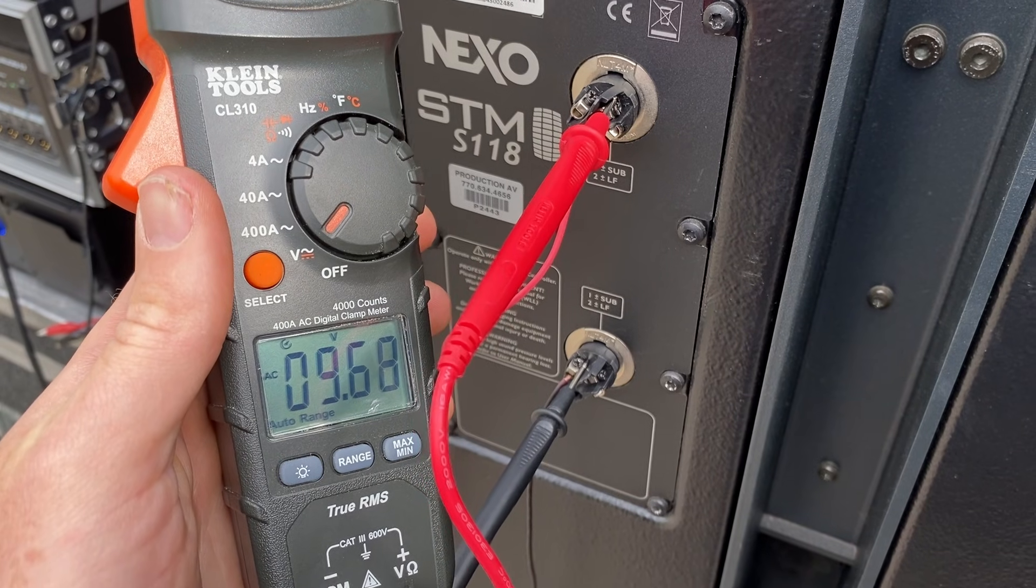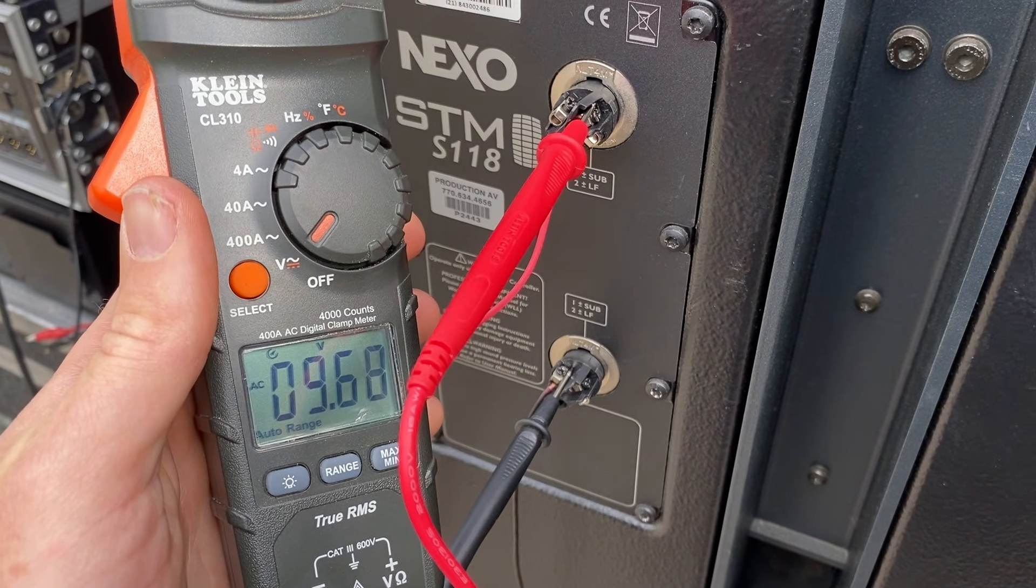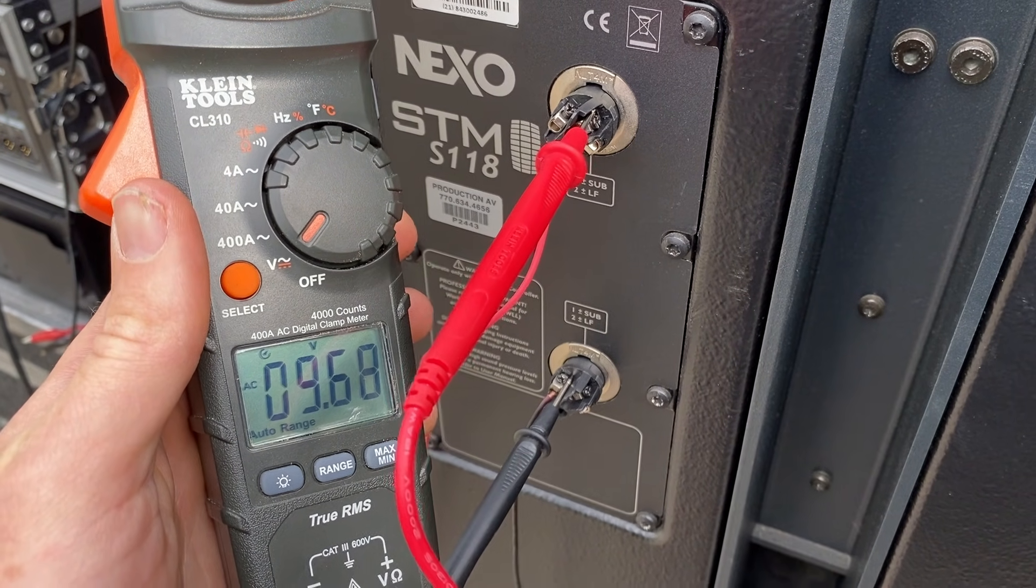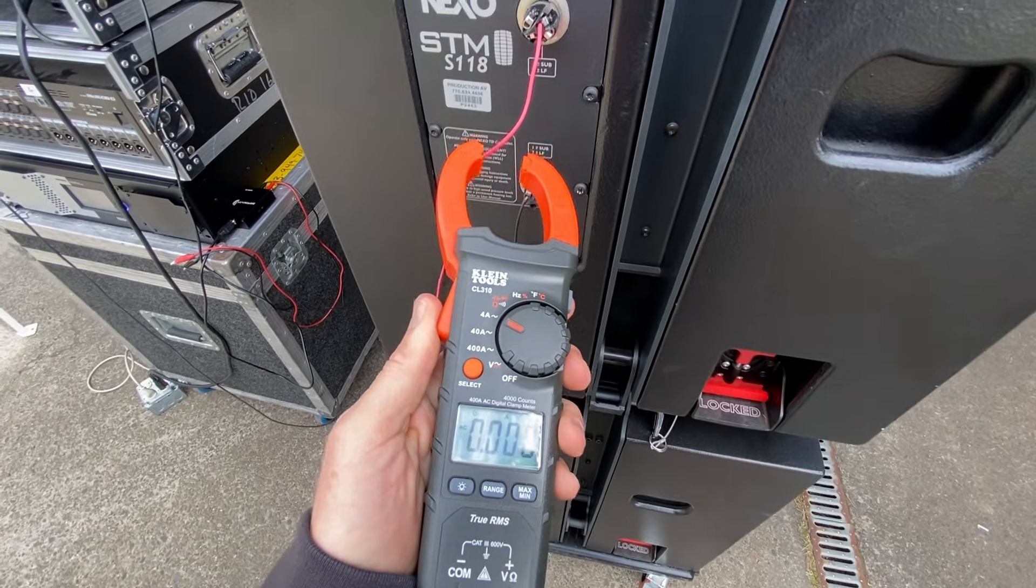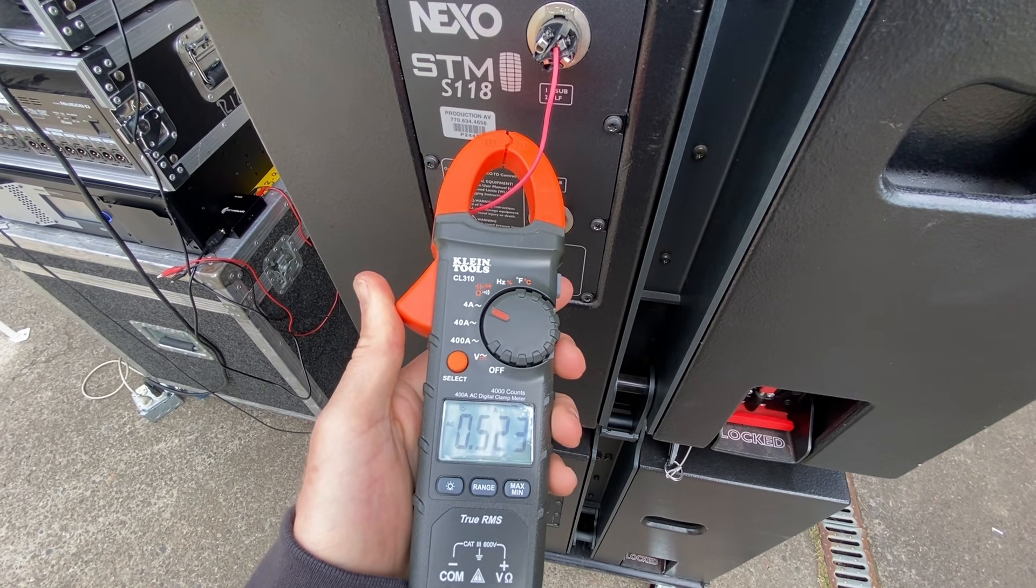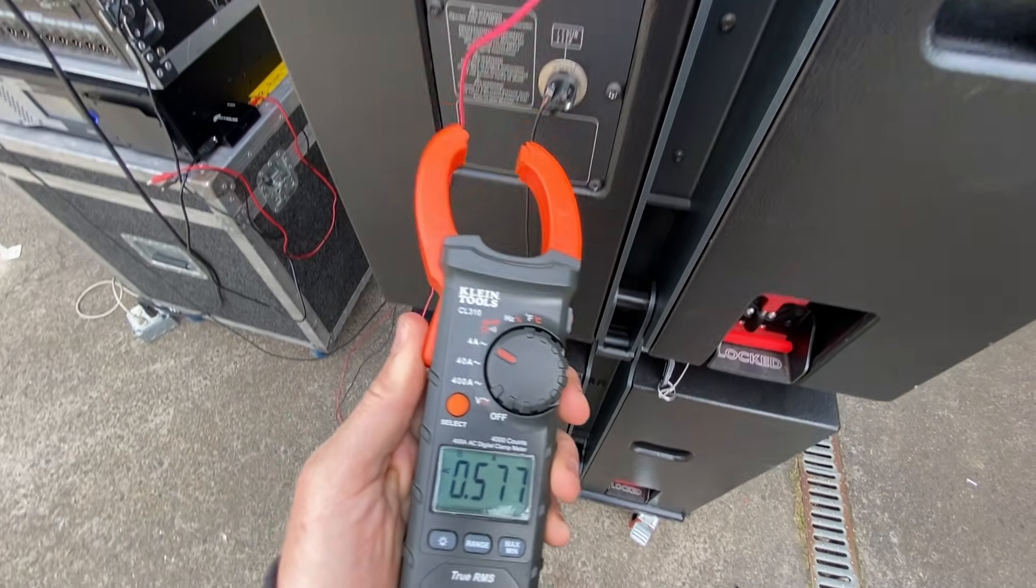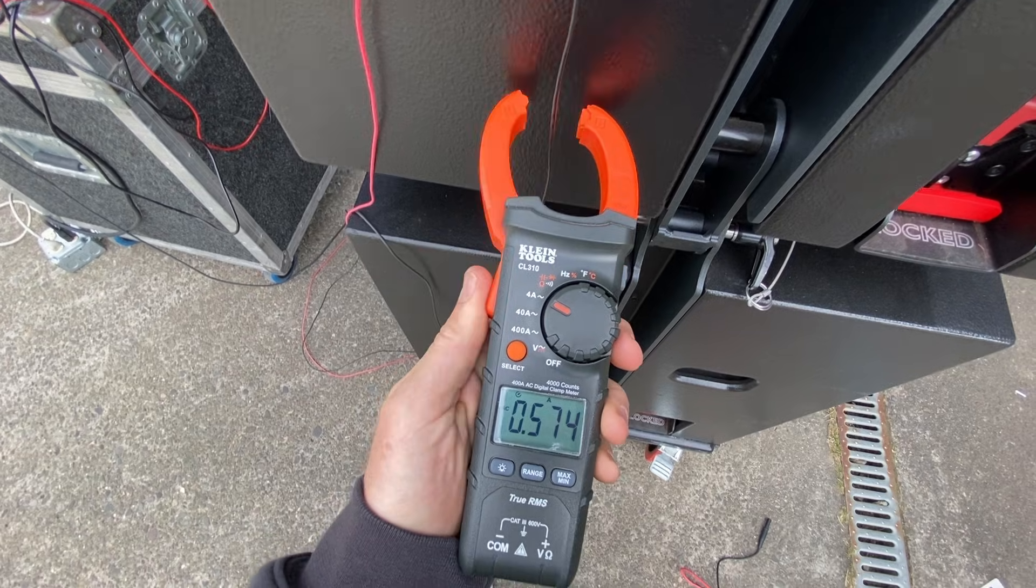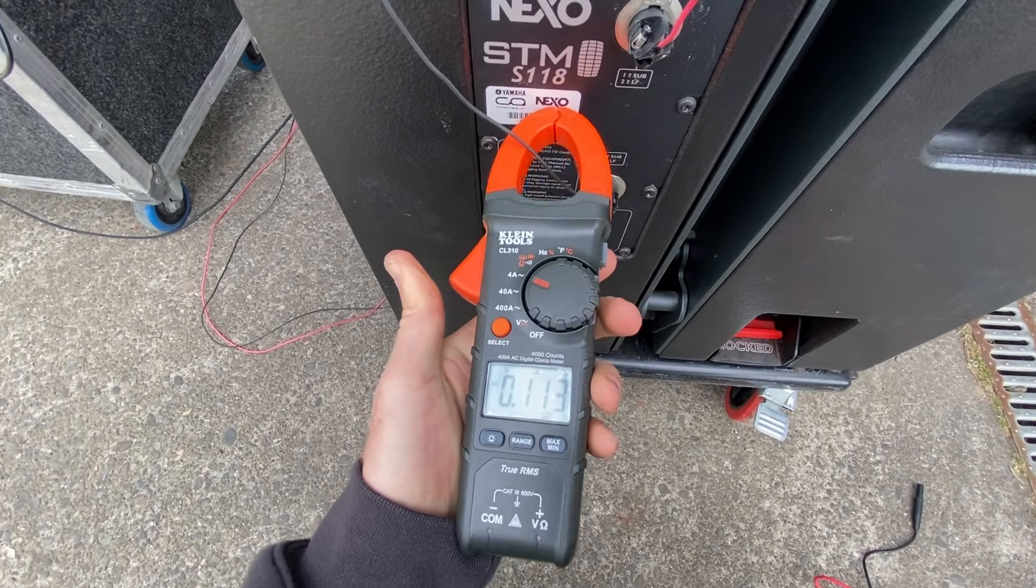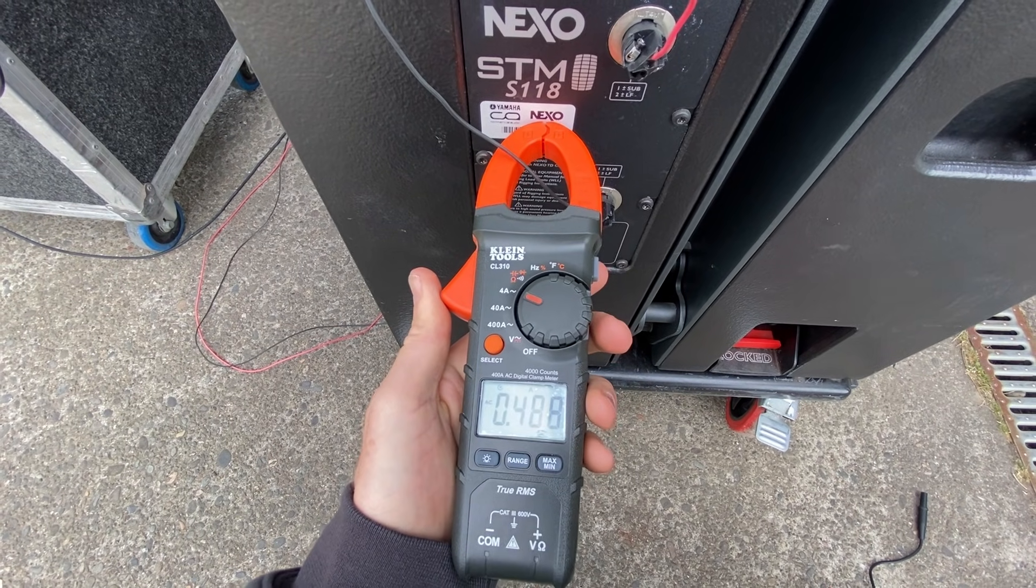Now if we look at the voltage from the top speaker, we can see that it's decreased by half. The same is true of the bottom speaker as well. If we look at the current reading, it looks to be about the same at each point in the system.